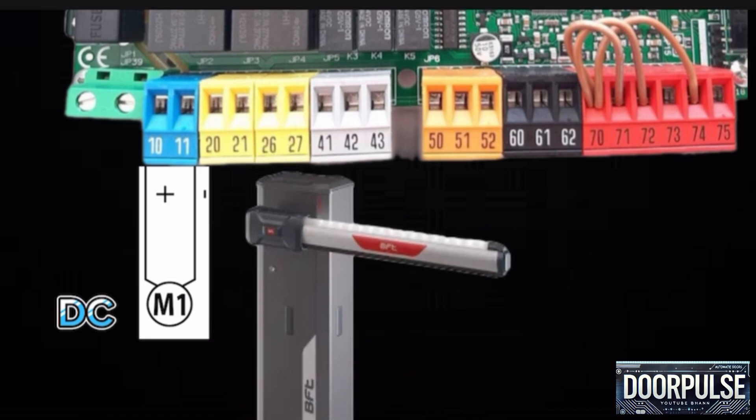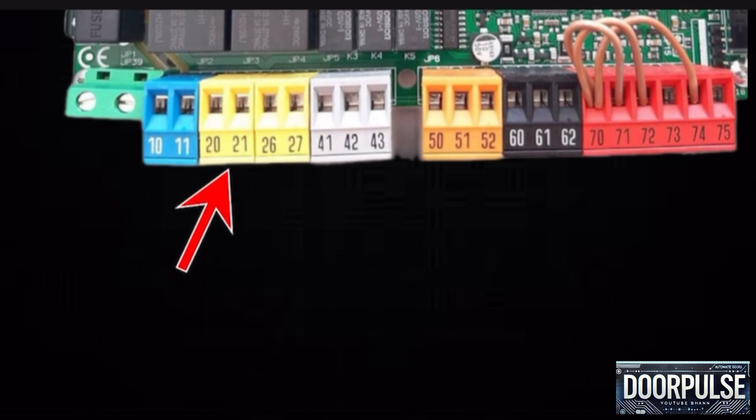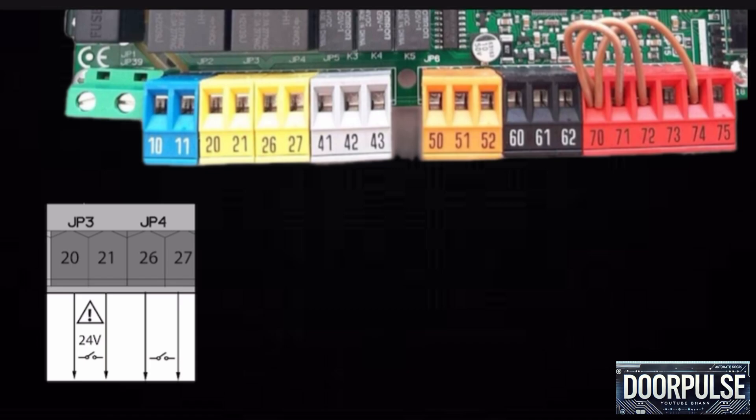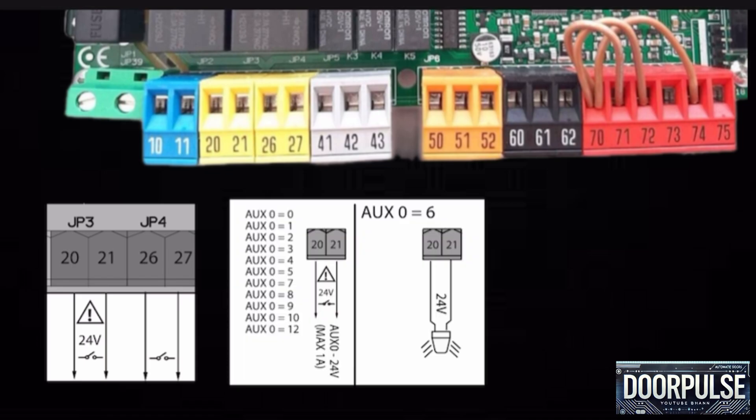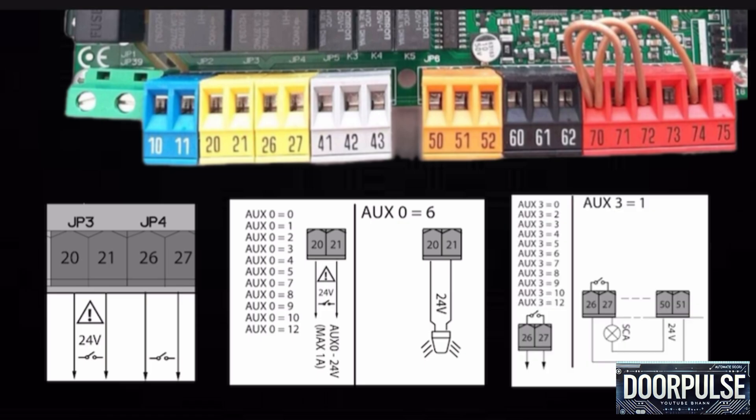JP3 block: a block for auxiliaries which are 24 volt power supply and max one ampere. Auxiliary zero configurable output. By default setting: flashing light, second radio channel, SCA gate open, night courtesy light, command zone light, command stair light, gate open alarm, flashing light, solenoid latch, magnetic lock, maintenance flashing light, and maintenance barrier status output.